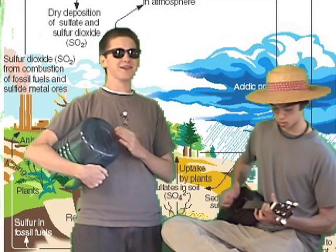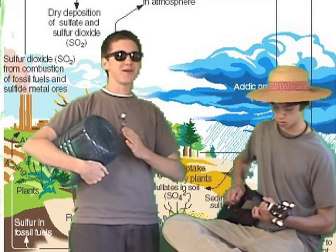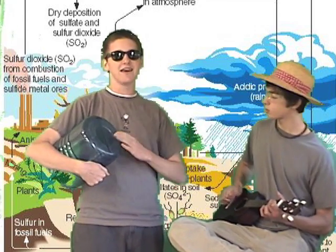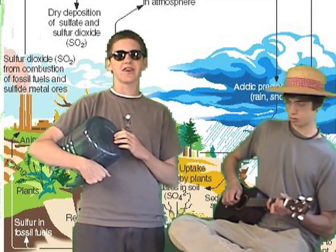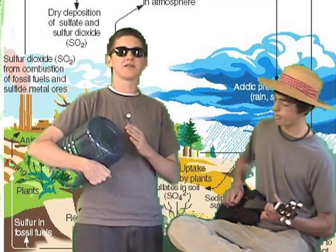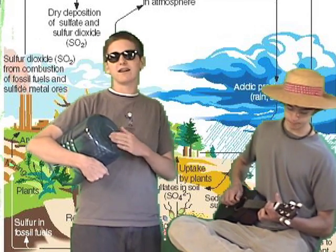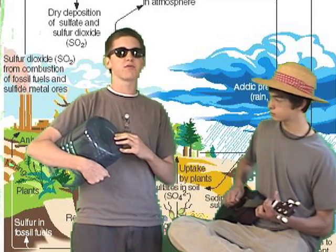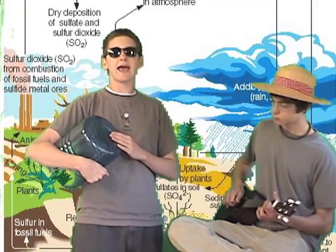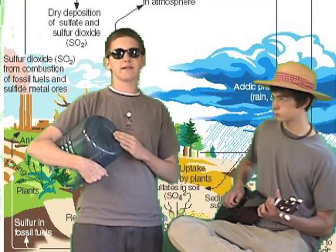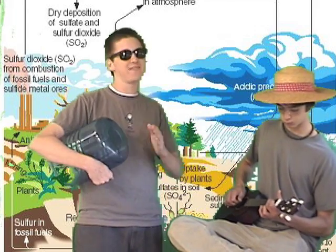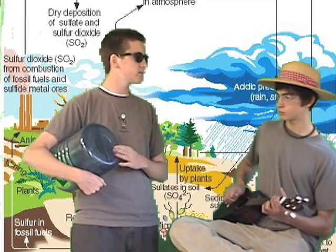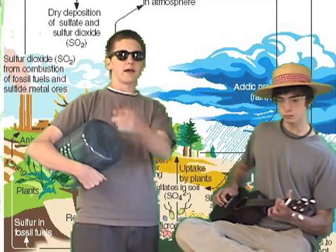The sulfur cycle goes round and round, starts with oil under the ground, goes up to our factories and cars, combustion sends it up to the stars, rains on down as acid rain, into the oceans it causes great pain, sent into the soil by microorganisms, that's taken back up to the plants by root system, plants and animals break down into soil, where it's compacted back into oil. And volcanoes.